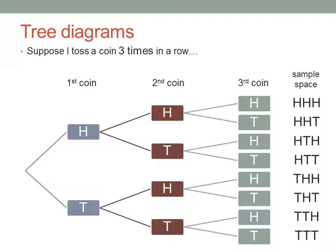So now I could ask questions like: what's the theoretical probability of getting at least two heads? I just look for the outcomes in the sample space that have at least two heads. That's four out of eight, or fifty percent — there's a fifty percent chance of tossing at least two heads if you toss a coin three times in a row.